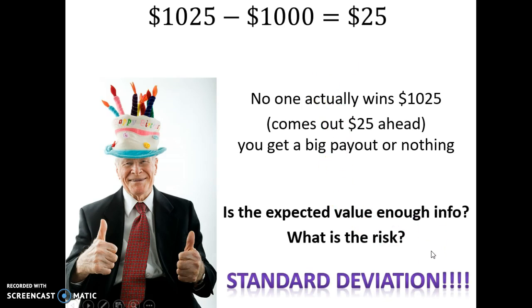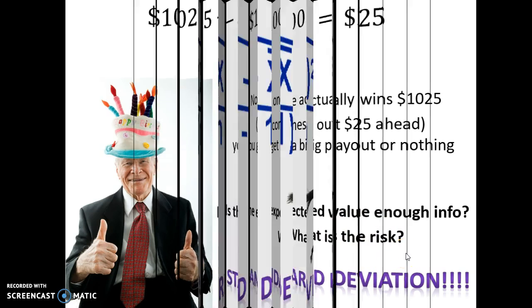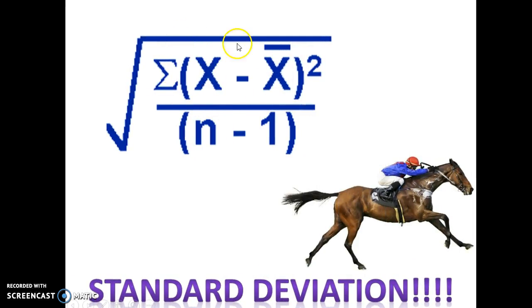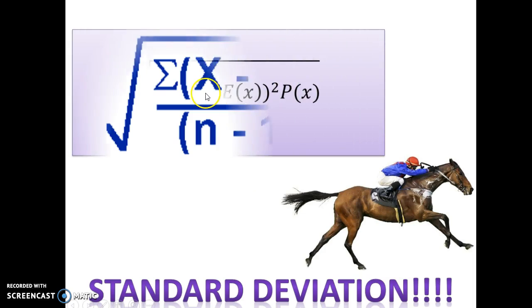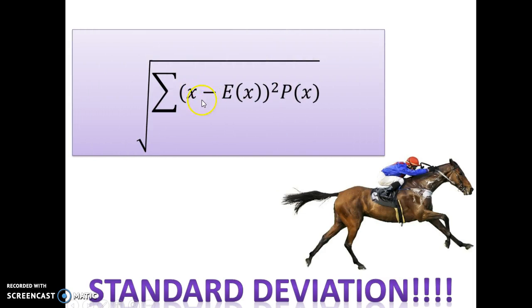Is this number $25 enough information for us to make a decision on whether to bet or not? And to really get that information, we need something else, which is called standard deviation, which you know well. Standard deviation looks like this. We did this before when we had large data sets and we could figure out how much spread there was, whether the values were spread out really wide or whether they were really close together. And this equation is actually close to what we're going to use for expected value.